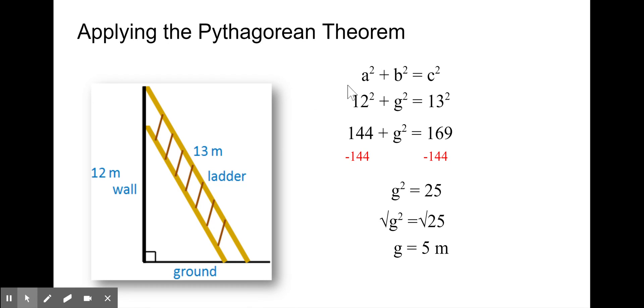We start with our formula and we substitute in our values. We know that the ladder is opposite the right angle and it is the longest side, so we substitute it in for C. 12 is one of our legs, so I can substitute it in for either A or B.